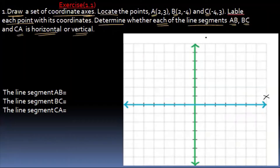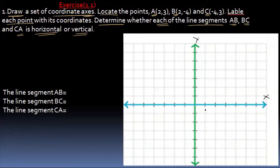x and y. The first one is x and y. So x is equal to 2 minus 4. x is equal to 4. Let's say 1, 2, 3, 4, 5.